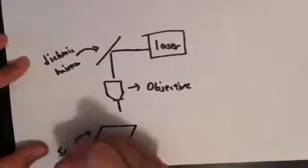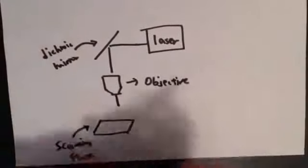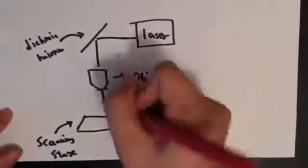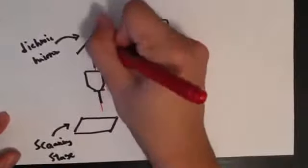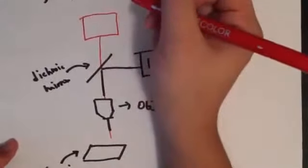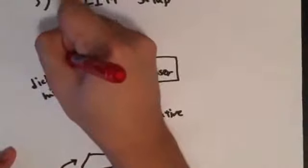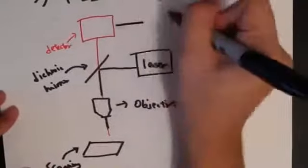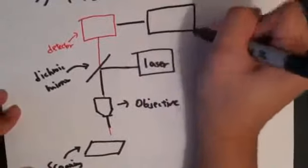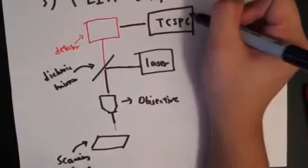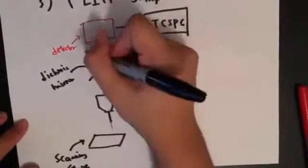After the excitation light hits the sample, light is emitted from the sample, which then gets collected by the objective. The signal travels past the dichroic mirror and is detected by a single-photon sensitive detector, which is connected to a time-correlated single-photon counting unit, abbreviated as TC-SPC. And this unit is used to calculate the fluorescence lifetime based on the time between the sample excitation by pulse laser and arrival of the signal at its detector.